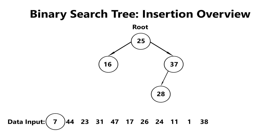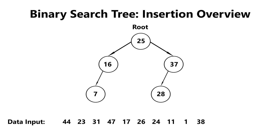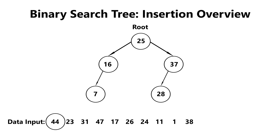If we were to insert 7: 7 is less than 25, so we go left. 7 is less than 16, so it becomes the left child of 16. Next, 44 is greater than 25, so we go right. 44 is greater than 37, so it becomes the right child of 37.